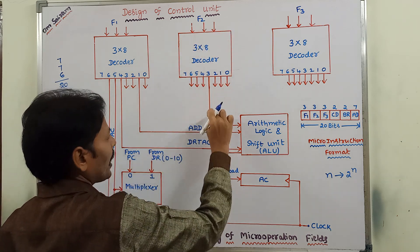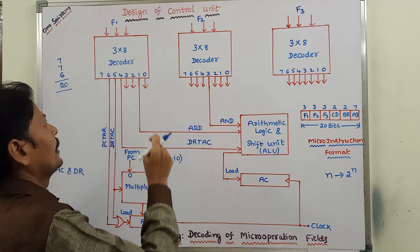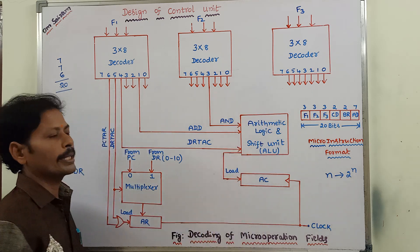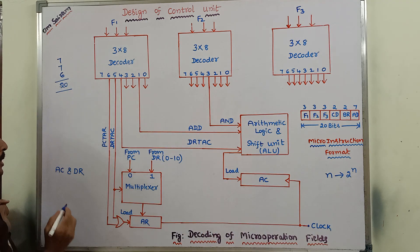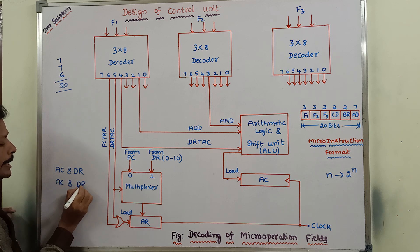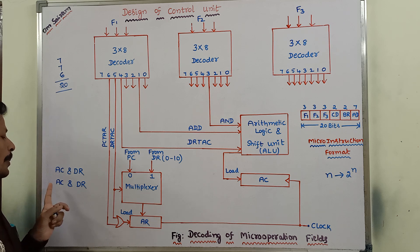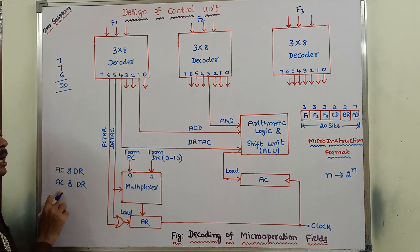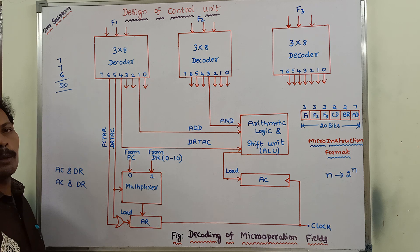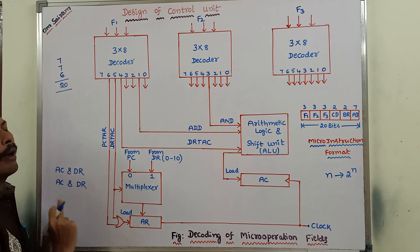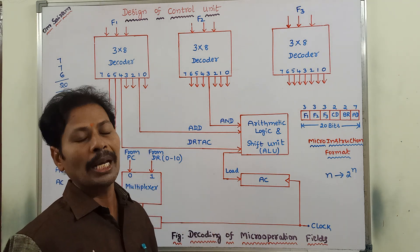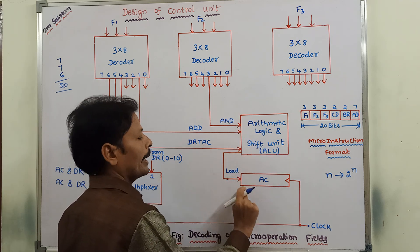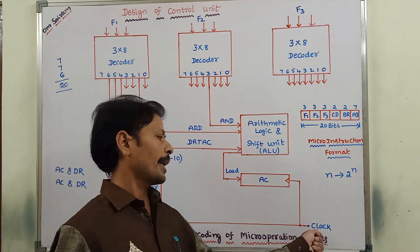From the F2 field, we are performing only the AND operation. From the F1 field, we take decoded output 1, which is sent to the arithmetic logic and shift unit to perform the ADD operation. The ADD operation is performed between the contents of the accumulator and the data register. After performing the ADD operation through the arithmetic logic and shift unit, the result is loaded back into the accumulator when the positive clock pulse is applied.